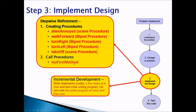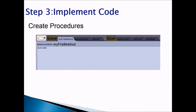Always do incremental development — that means write a few steps at a time and then test your program. When you're implementing code and creating procedures, there are two scene procedures: alien annoyed and take off. The other procedures you would create are biped procedures: walk forward, turn left, and turn right.